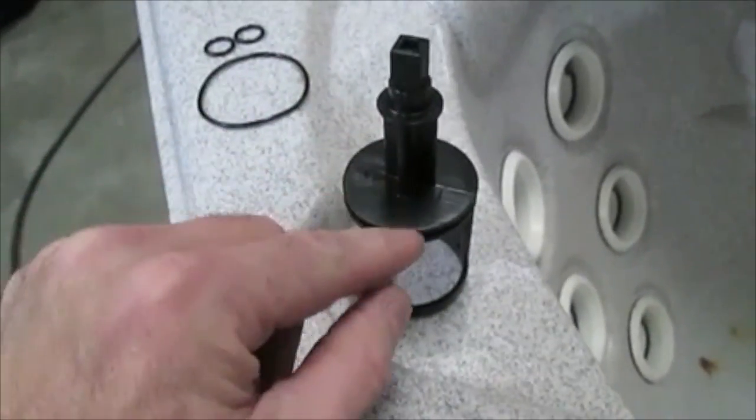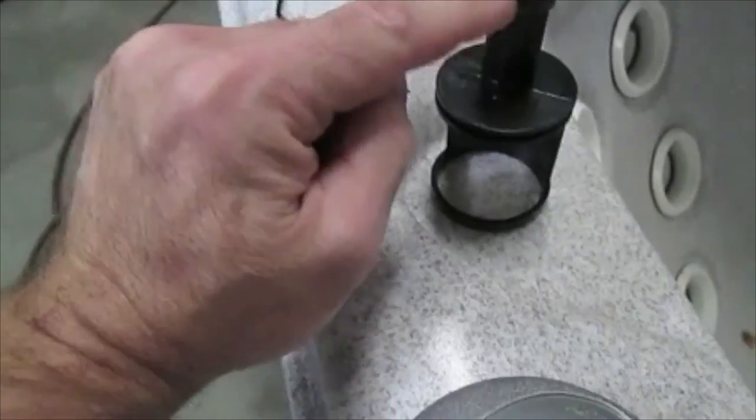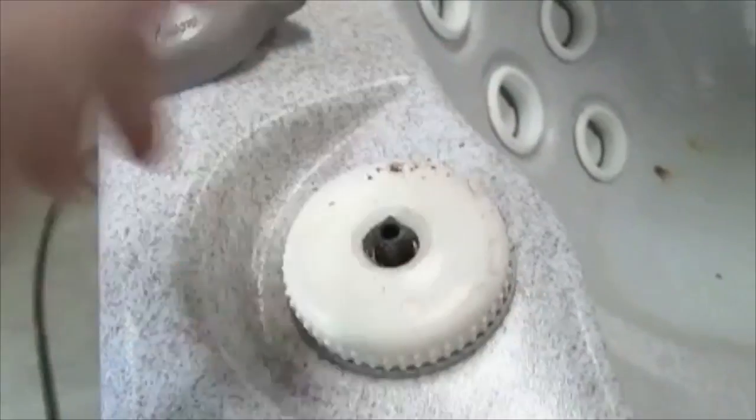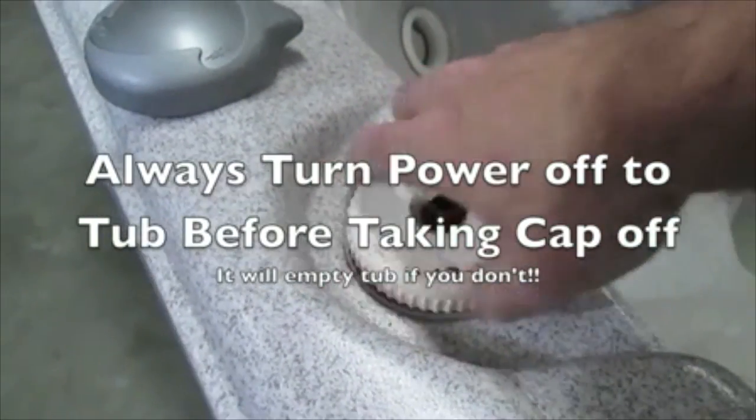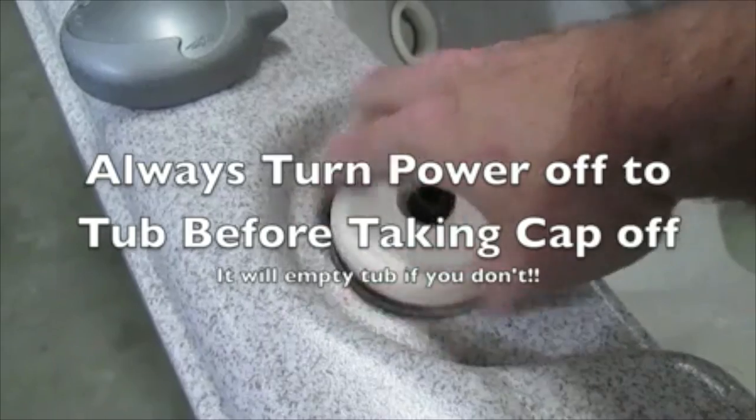Also, there's a stem that looks like this, and there's two O-rings on the stem, and then there's a big O-ring. So we're going to keep on opening. I'm going to switch hands.